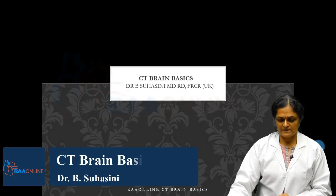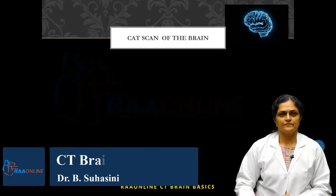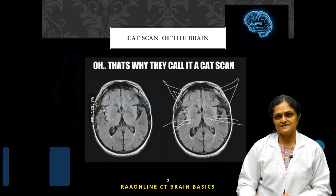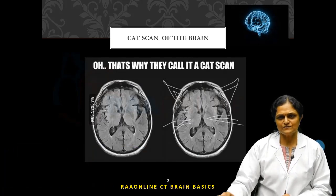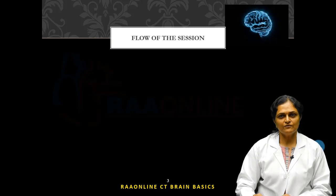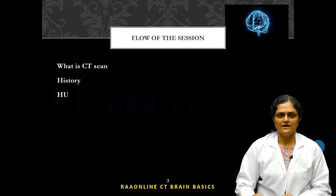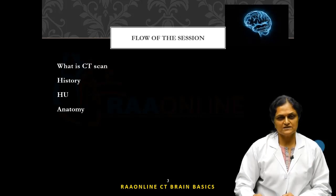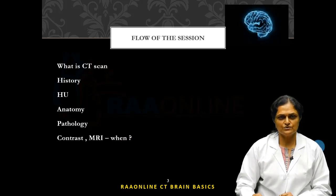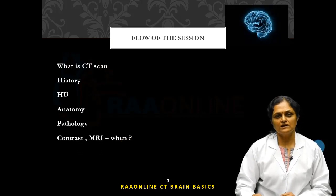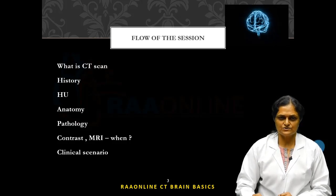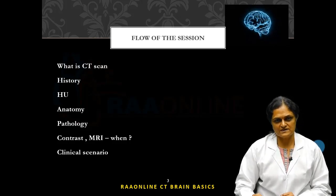Today's session will be on the basics of CT brain. CT brain was originally called the CAT scan of the brain. The flow of the session will cover: the basics of what is a CT scan, a brief intro into the history and how it all came about, an introduction to Hounsfield units, a basic outline of the anatomy of the human brain as seen on a CT scan, a few pathologies, when to give contrast, when to order MRI, and a few clinical scenarios to understand the use of a CT scan of the brain.